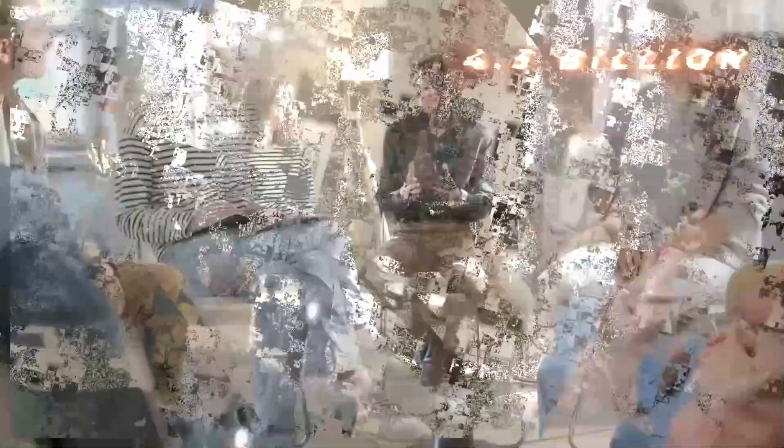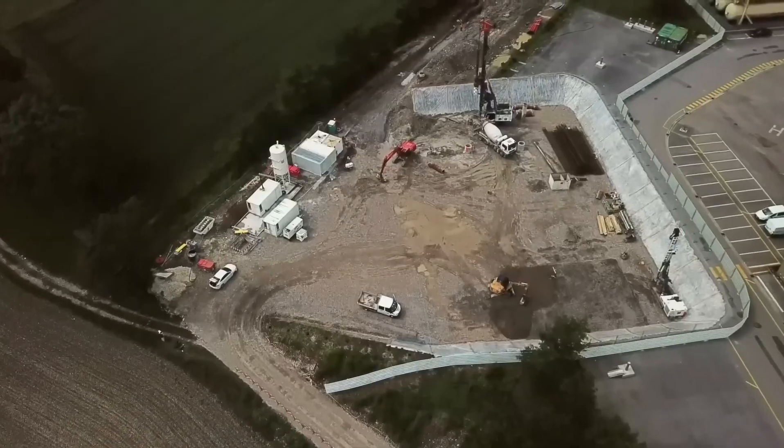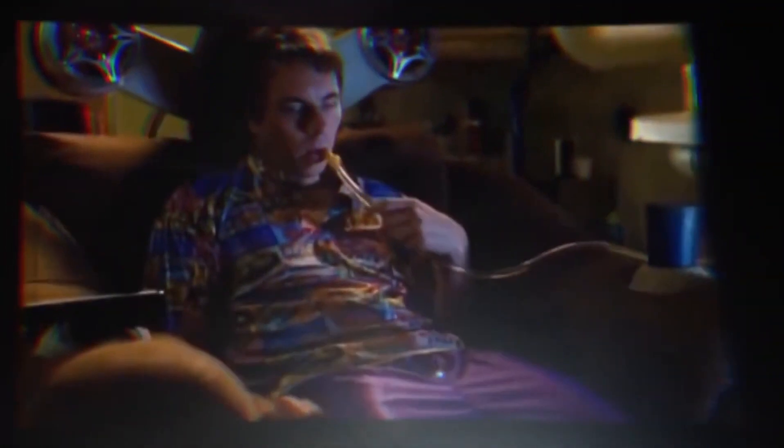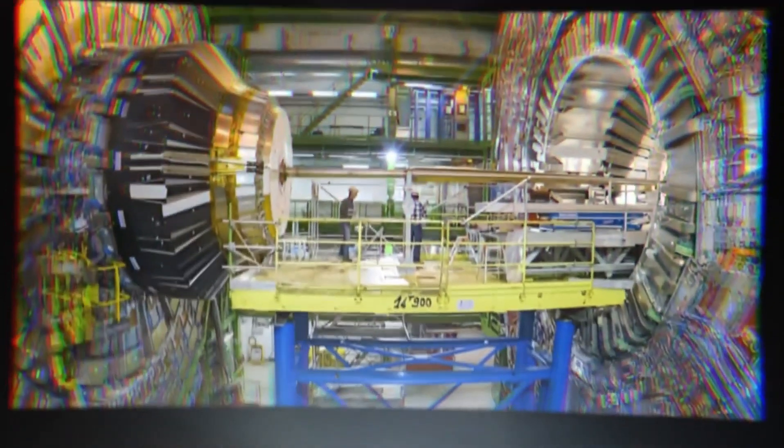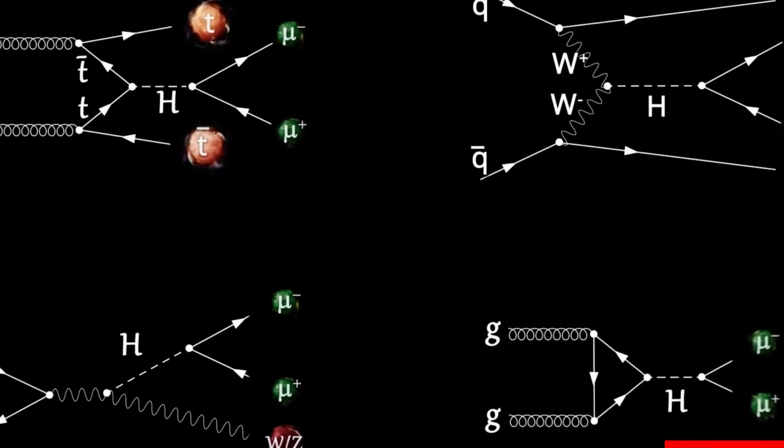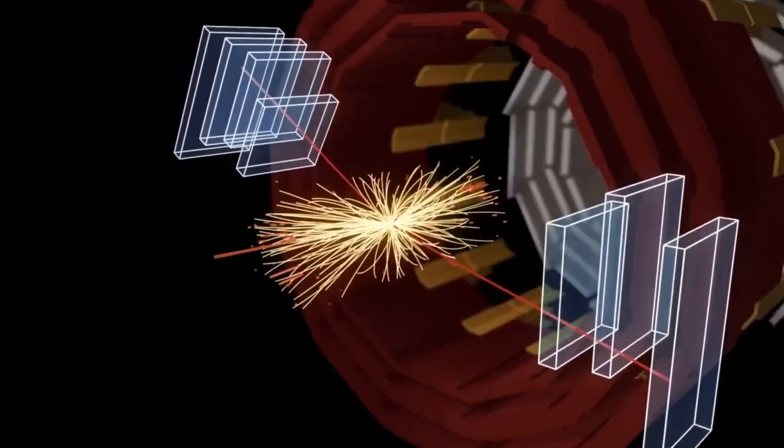This massive machine is capable of accelerating various particles round and around the loop until they're traveling near the speed of light and completing over 11,000 laps every second. They accomplish this with a series of incredibly powerful electromagnetics that create a magnetic field within the accelerator, more than 1,000 times stronger than the field that surrounds the Earth.